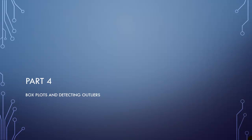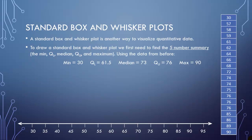For part four, we'll discuss box plots and methods for detecting outliers. There are two types of box plots we're going to talk about, but let's start off with a standard box plot, or box and whisker plot, as it's often called.